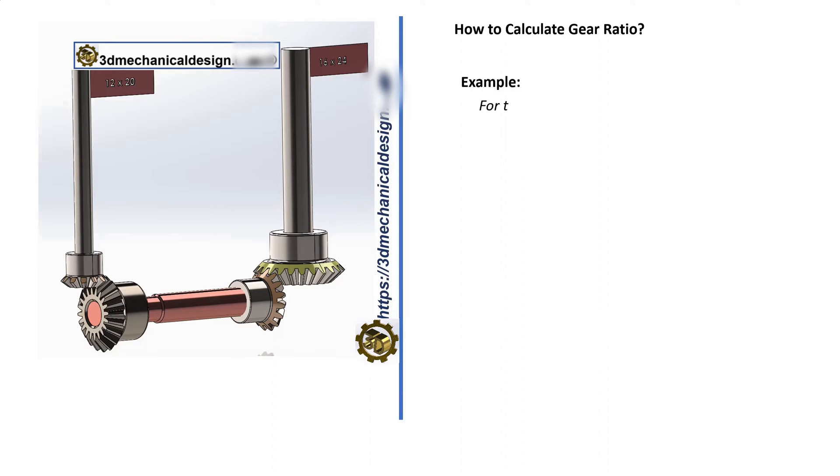Example: For the gear system shown given, Gear A has 12 teeth, Gear B has 20 teeth, Gear C has 16 teeth, Gear D has 24 teeth. Input RPM is 60 RPM clockwise.